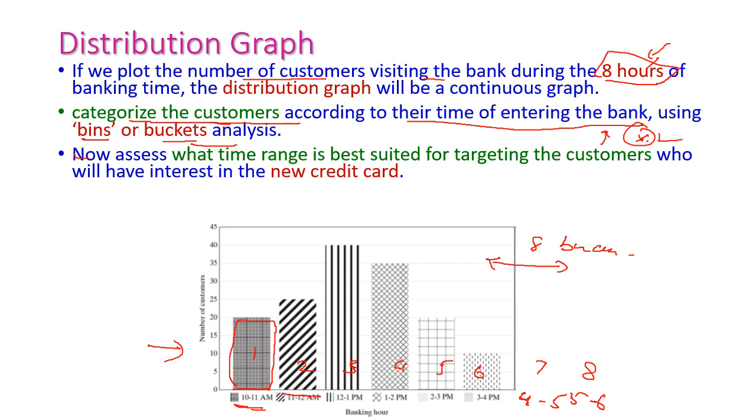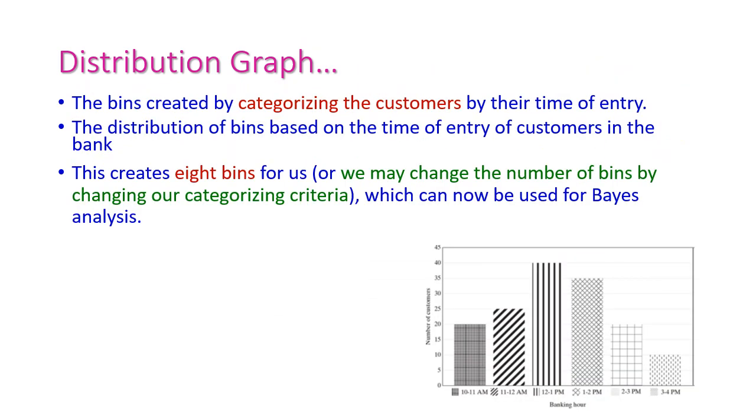Now we can easily assess what time range is best suited for targeting the customer. As per our example, this particular time period, 12 to 1 pm, is best time to target the customers who have interested in new credit card. Here the bins are created to categorizing the customers by the time of entry to the bank, and the distribution of bins based on the time of entry of customers in the bank.